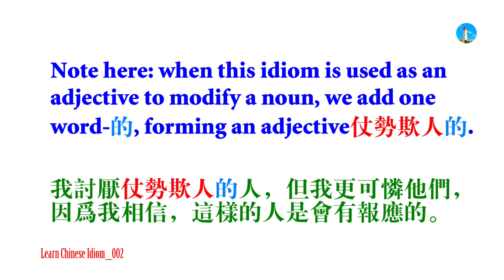Note: when this idiom is used as an adjective to modify a noun, we add one word — 的 — forming the adjective 仗势欺人的.